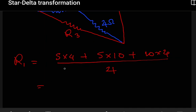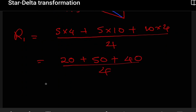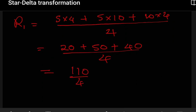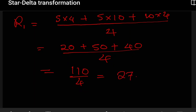We'll multiply these in pairs. So we can say 5 by 4, plus 5 by 10, then plus the remaining one which is 10 by 4. Then we'll divide by the 4 ohm resistor since it's R1. So from here, this is going to be 20 plus 50 plus 40, then divided by 4. The numerator is going to be 110 divided by 4. So if we calculate this, we get R1 as 27.5 ohms.